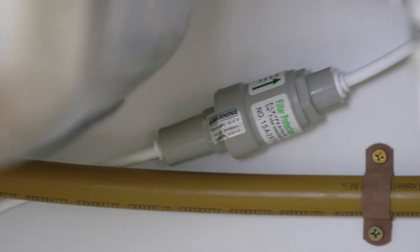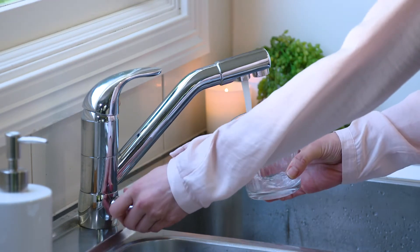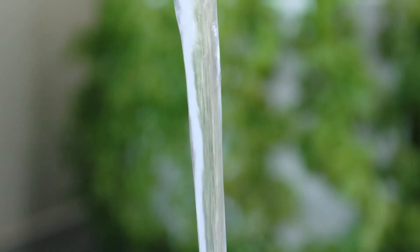Pressure limiting valve is required for all underbench water filtration systems. This will reduce the risk of failure for the installed system if the mains water pressure or pump pressure becomes too great.